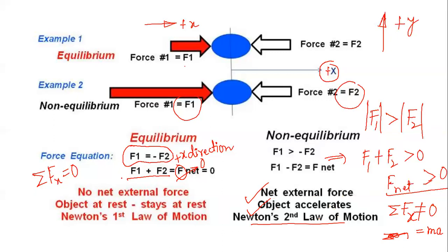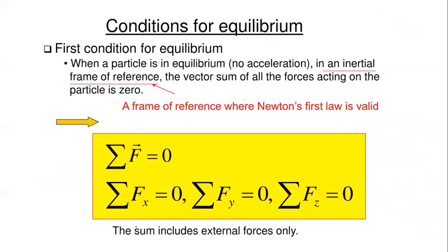Since the net force is zero, according to Newton's first law, if the net force applied is zero, the state of motion of the body will not change. The first condition of equilibrium is that when a particle is in no-acceleration state in an inertial frame of reference — also called the Newtonian frame of reference — the vector sum of all forces is zero.